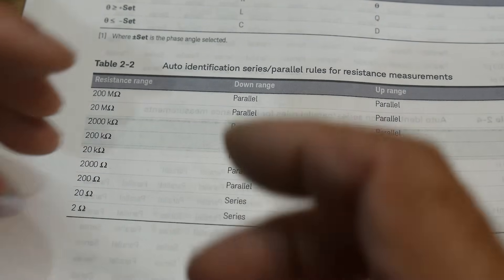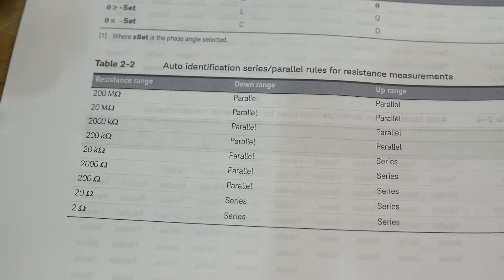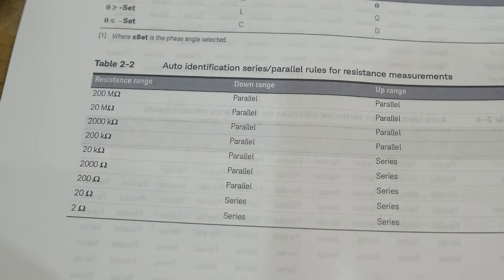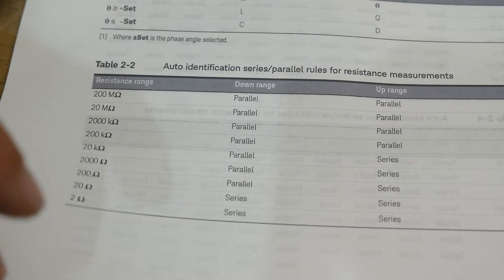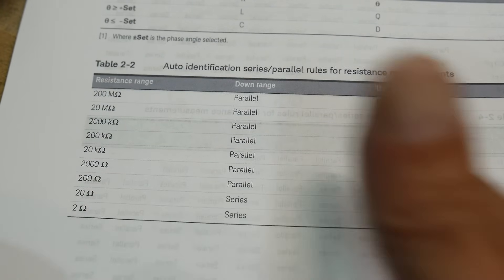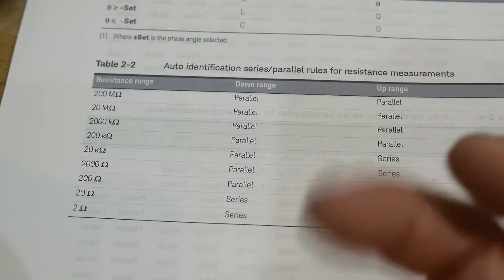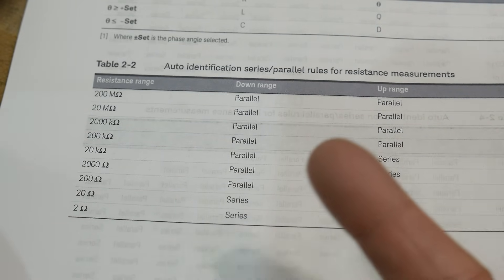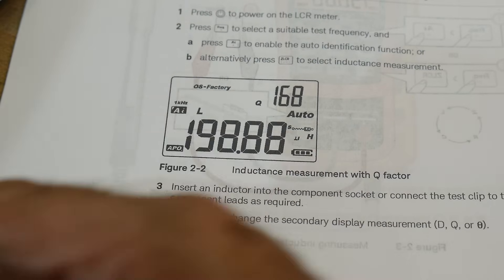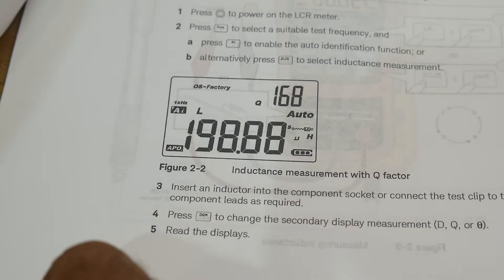So even though you would think it wouldn't matter with the resistance, the calibrations and stuff are better with one mode or the other, because they are different mathematical models inside of the device. So when you do the open short calibration, it does store those cal datas differently for the series and parallel.